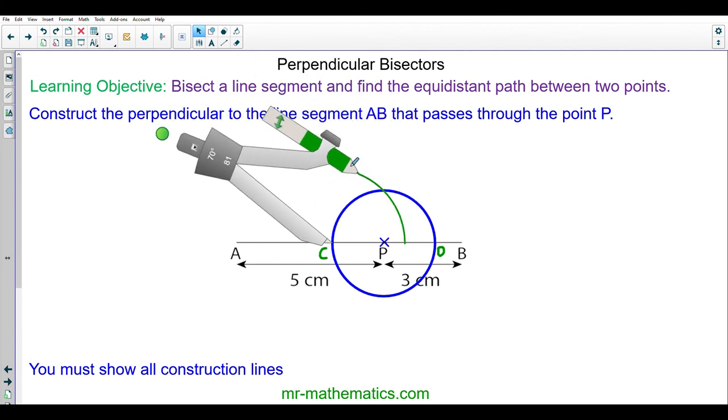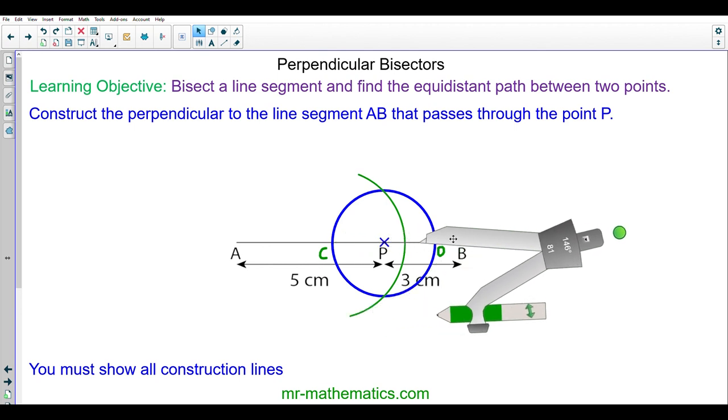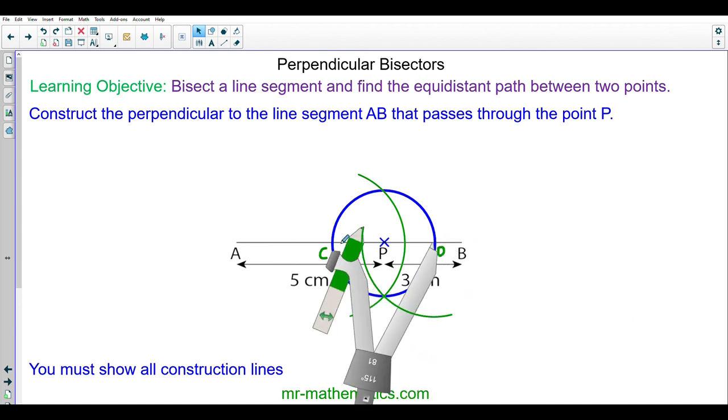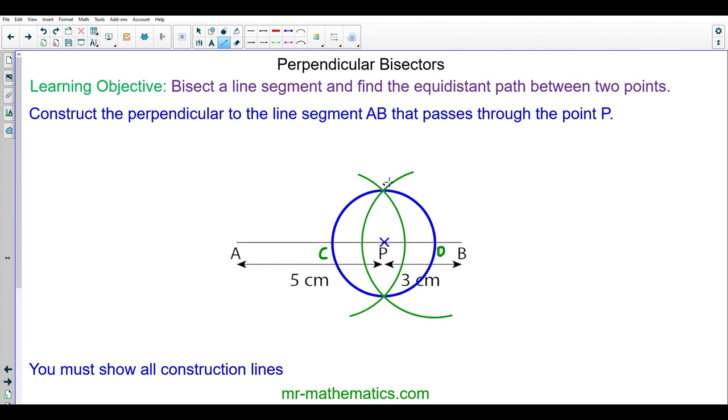And I'm going to draw an arc above and below. Keeping the radius the same I'll do the same from point D below and above the line. So now I'll draw a line that intersects with two arcs and passes through point P.